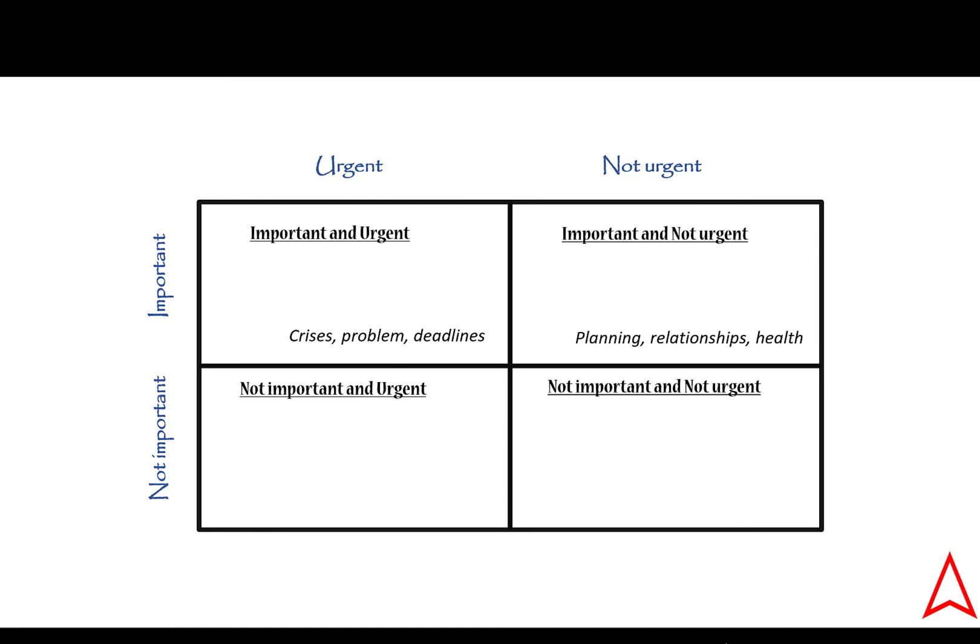Quadrant three: urgent and not important tasks. Quadrant three consists of interruptions, not important meetings and papers. Here are some specific examples of quadrant three activities: phone calls, text messages, most emails, a coworker who comes by your desk while you're in the middle of something to ask for a favor, a request from your former employee to write a letter of recommendation on his behalf.